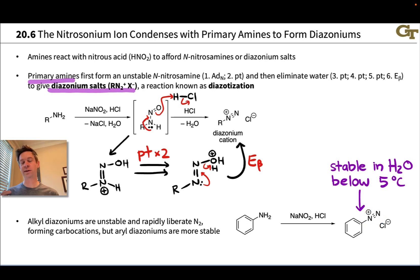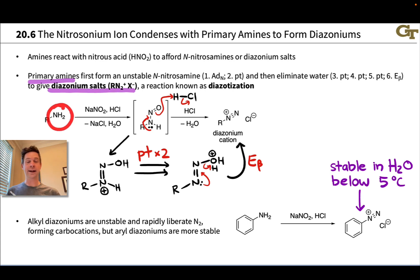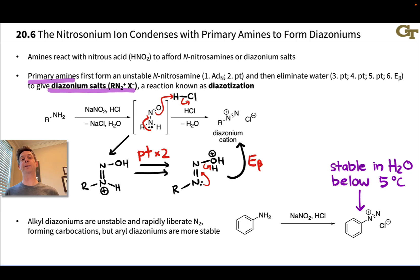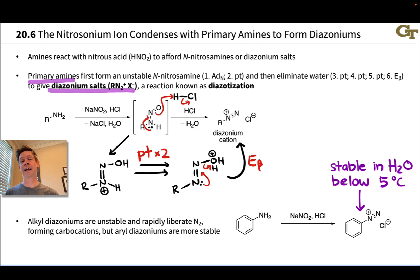We can add a wide variety of nucleophiles to this carbon and displace N2 in a nucleophilic aromatic substitution reaction involving diazonium salts. The beauty of it is we know how to install the NH2 group on an aromatic ring in a controlled manner via nitration followed by reduction with something like tin and hydrochloric acid. This enables nucleophilic aromatic substitution in a very controlled way without a need for electron-withdrawing groups or a benzyne intermediate.